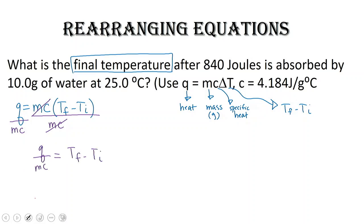To get T final all by itself, we can add T initial to both sides. Minus T and plus T will cancel each other out. So we finally have T final is equal to T initial plus Q over MC.